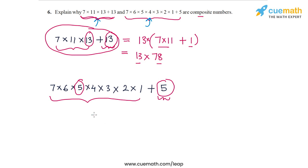So if we take this factor of 5 common from the two terms, we can write this as 5 times, and then from the first term we'll be left with 7 into 6 into 4 into 3 into 2 into 1, and then from the second term we will be left with 1.